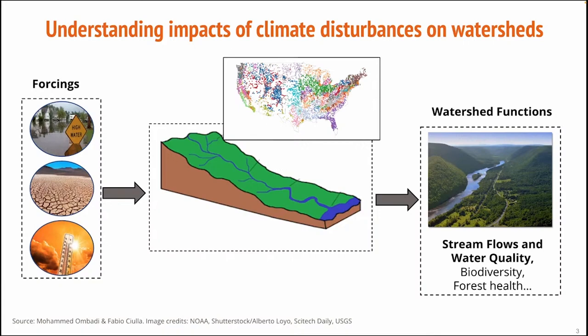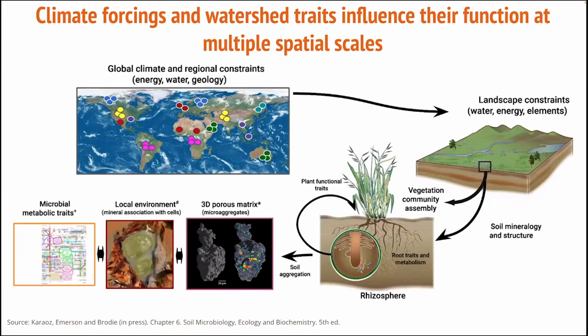Some of the questions we ask include: how do we quantify watershed response to disturbance, how do the properties of watersheds influence how they respond, and how can we predict watershed functions when disturbances may occur anywhere and at any time, particularly in unmonitored basins? A key aspect of our approach is our use of traits — a concept that originates from biological sciences. Watershed traits are their properties such as climate, topography, geology, vegetation, as well as land cover, land use, water management, and other human activities.